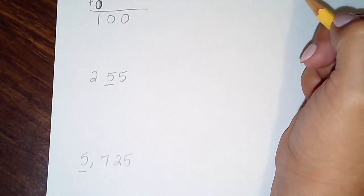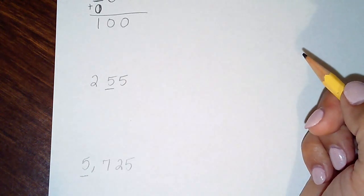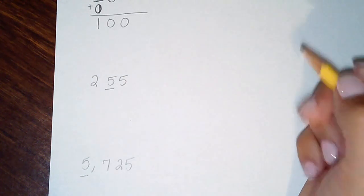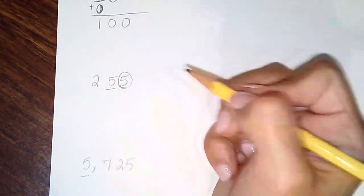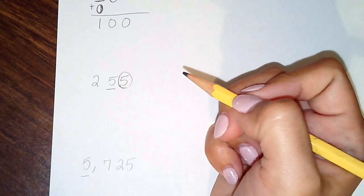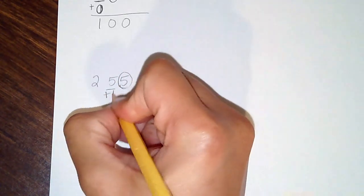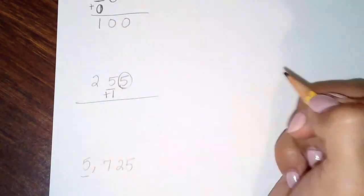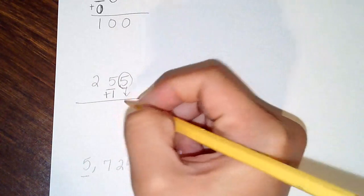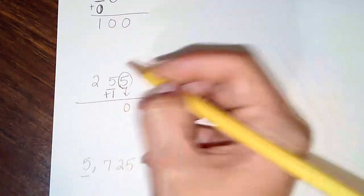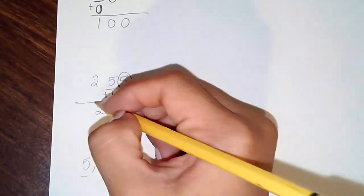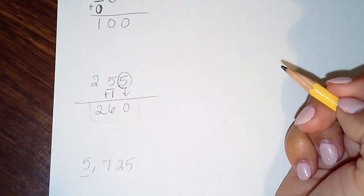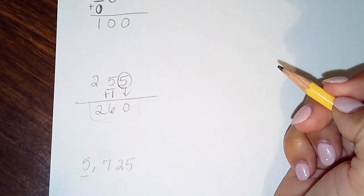The second example: they want you to round to the nearest tens place. You circle the boss — that's a big boss, so it tells the underlined digit to go up by one. Five plus one is six. The boss and digits to the right turn into zeros. That gives you the answer rounded to the nearest tens place.